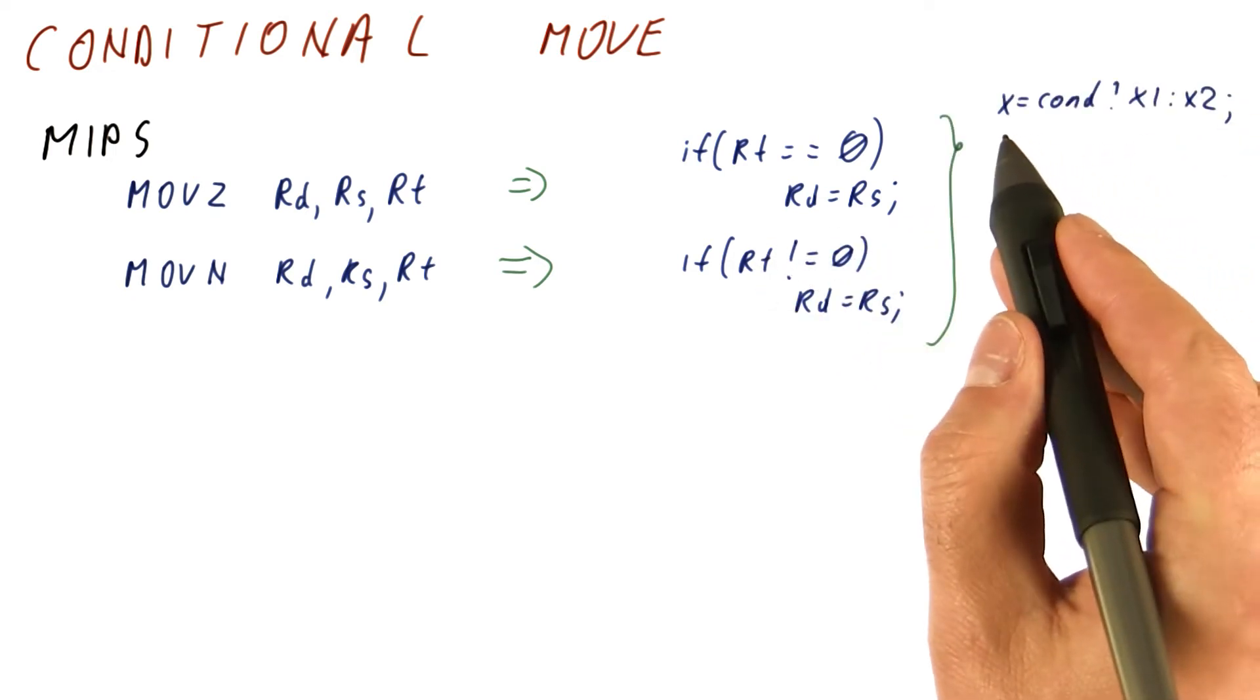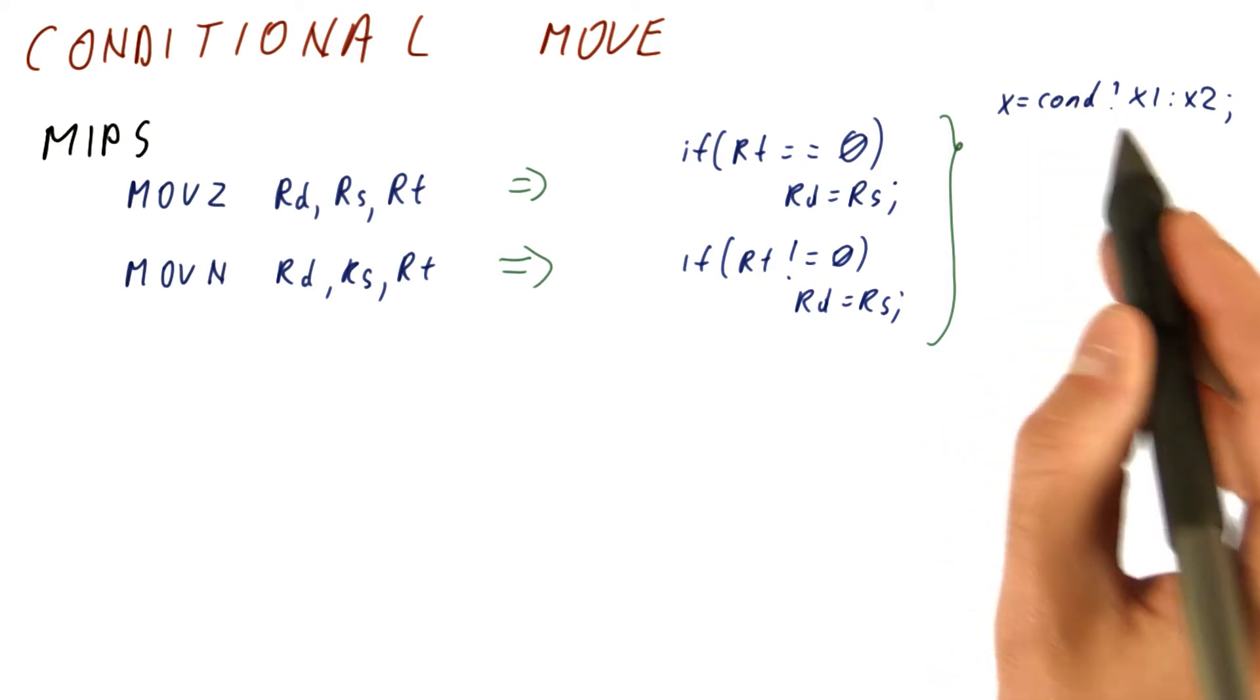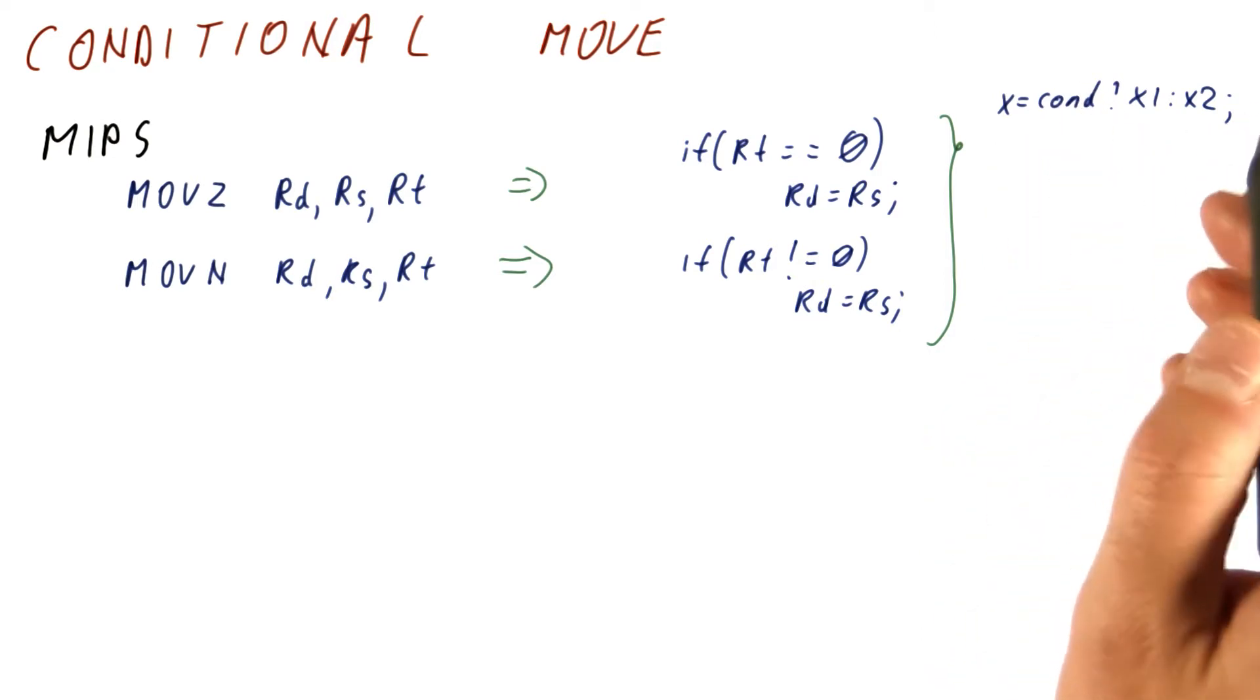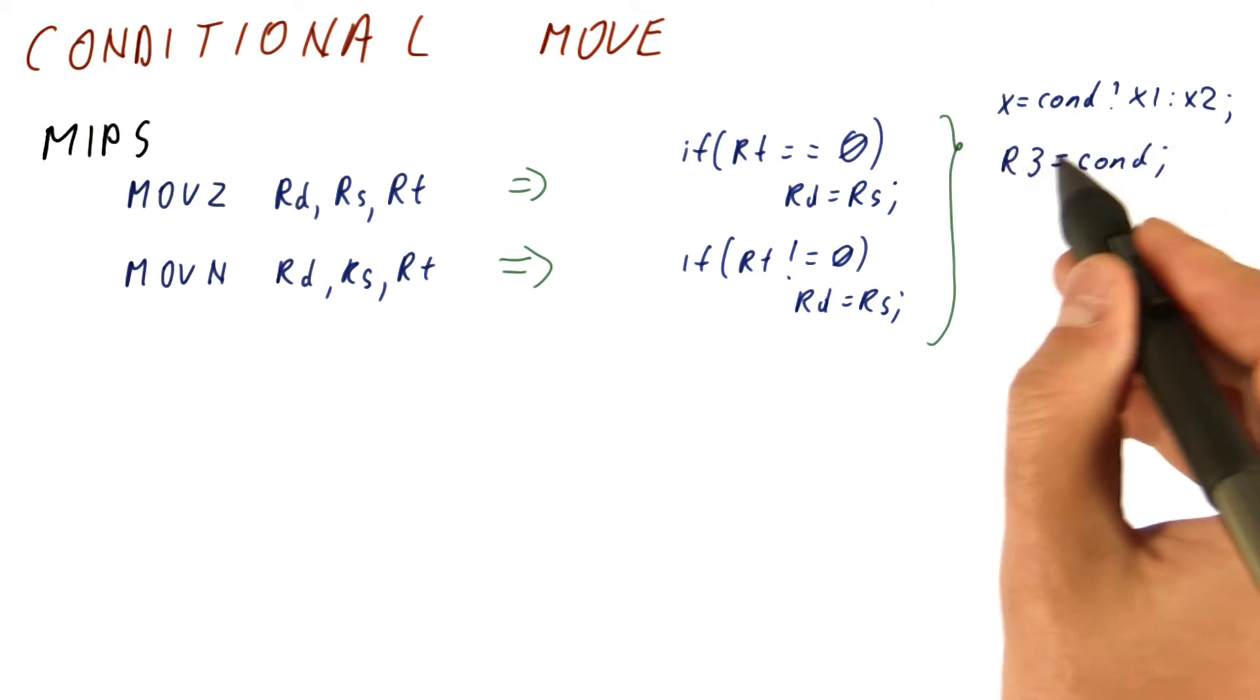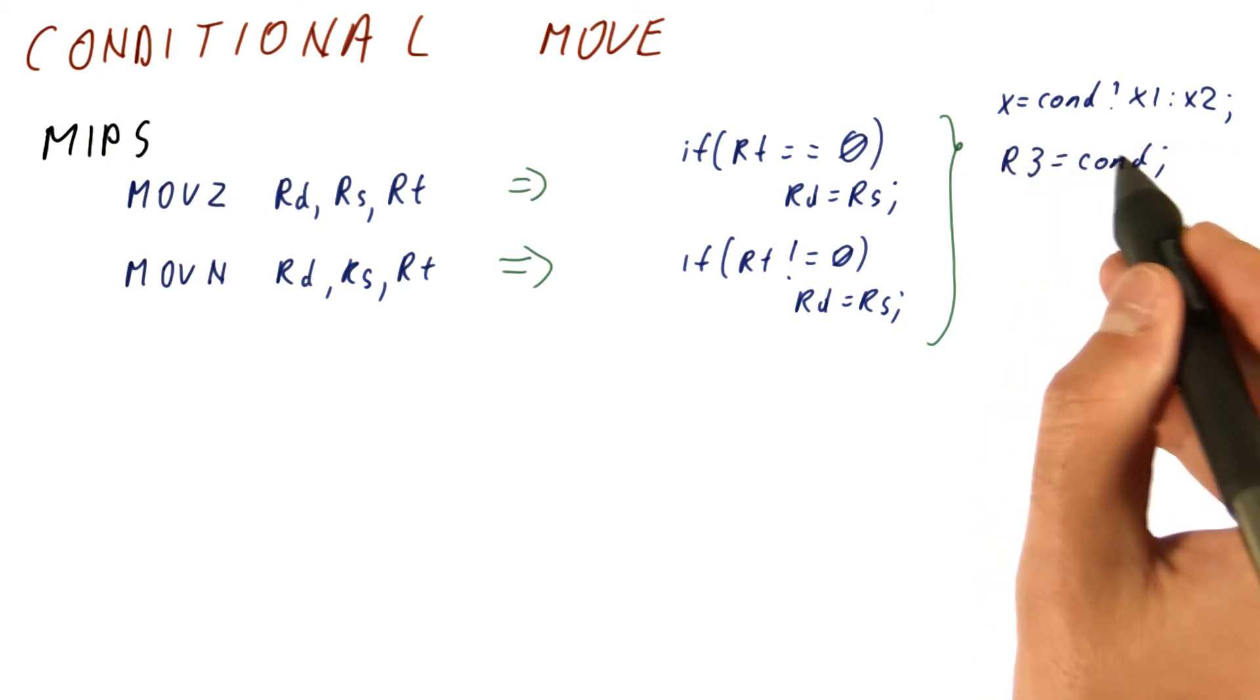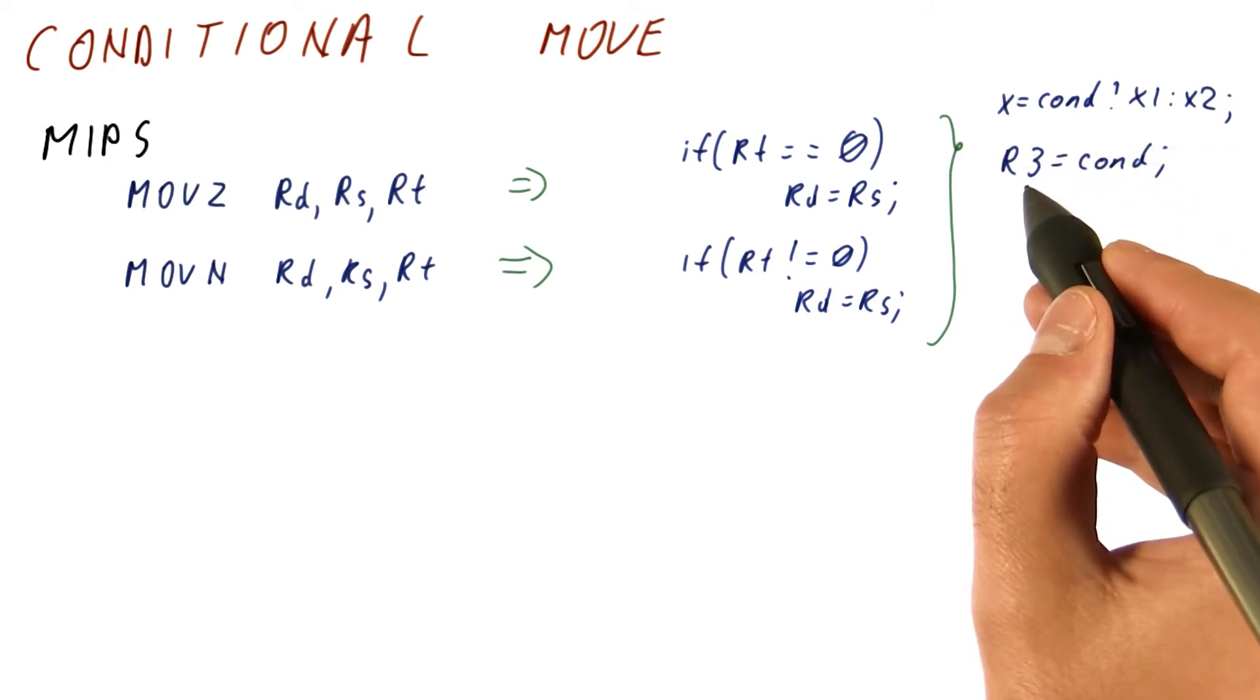So we would implement our x equals, depending on condition x1 or x2, by using comparisons to put the result of the condition into, let's say, R3.